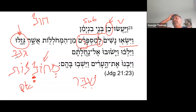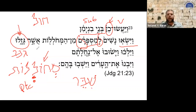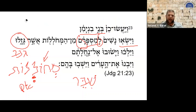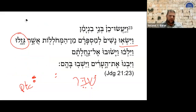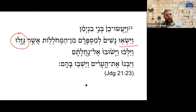Let's take the Ten Commandments — lo tignov. The rabbis have said that the Ten Commandments appear twice, once in Exodus and once in Deuteronomy. So the rabbis read the Ten Commandments once for stealing property and another for stealing people — abducting people. It's the same verbs used for both actions: gazal and ganav.